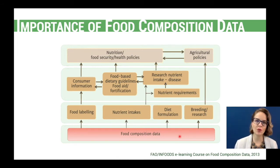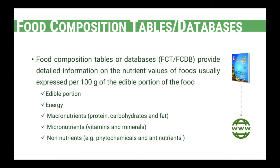If food composition data is so important, where can we find it? We can find it in food composition tables and databases, because they provide detailed information regarding the nutrient content of foods. This information is usually expressed per 100 grams of edible portion of the food. Most food composition tables include information regarding energy, macro and micronutrients, and sometimes also non-nutrients such as anti-nutrients.